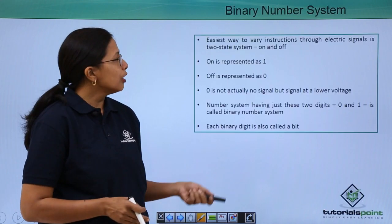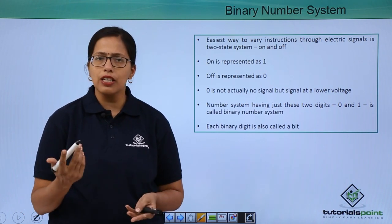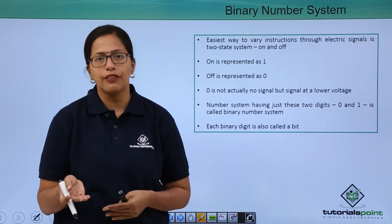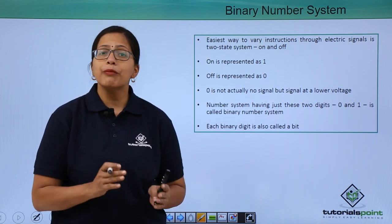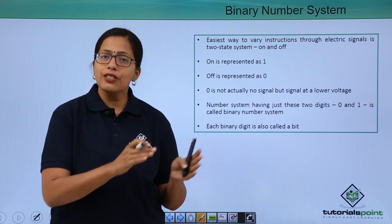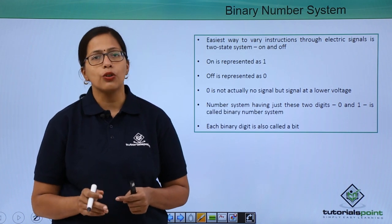In a computer, it is the easiest to vary instructions in just two states. Either the signal is there, that is on, or the signal is not there, which is off. Binary number system does exactly that. It represents presence of an electric signal with 1 and absence of an electric signal with 0.